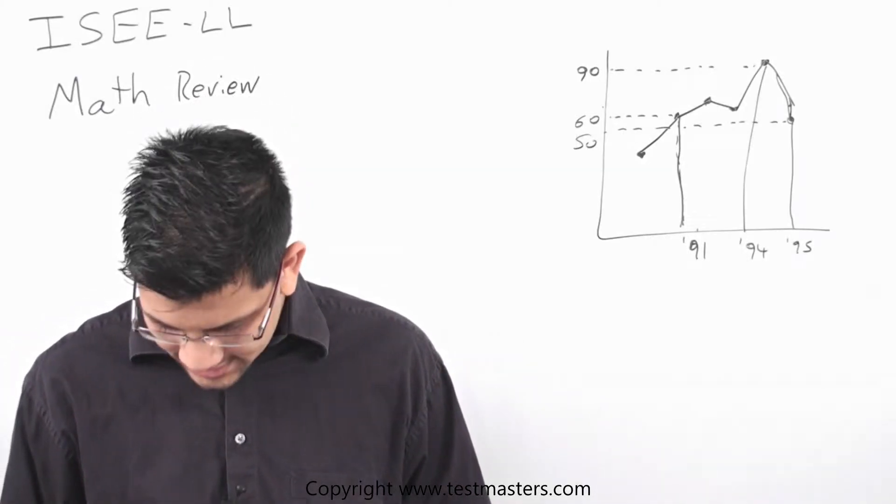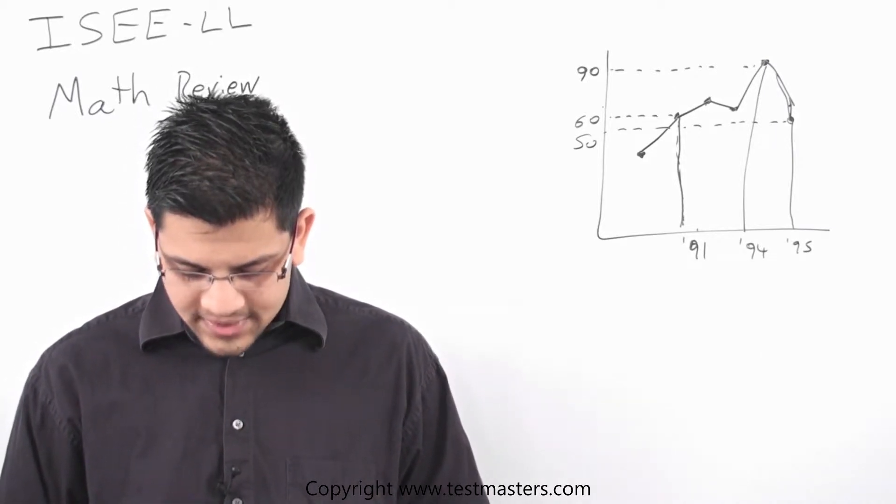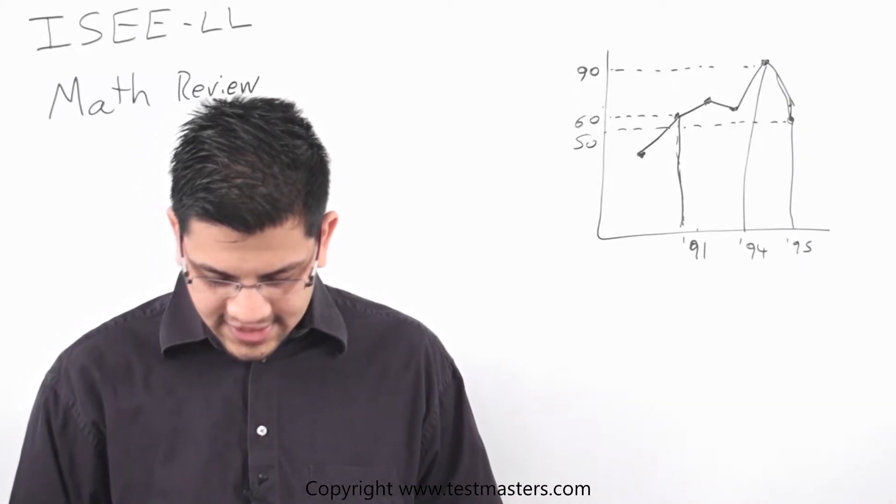Let's take a look at questions number 1 and 2 on page J18. So number 1, what was the increase in support that the president of Fictionlandia received from 91 to 94?